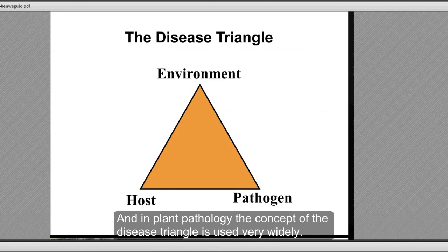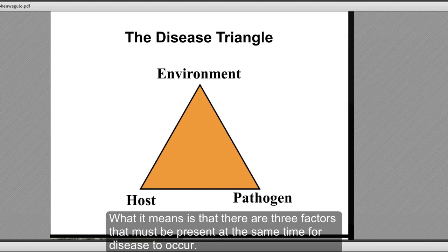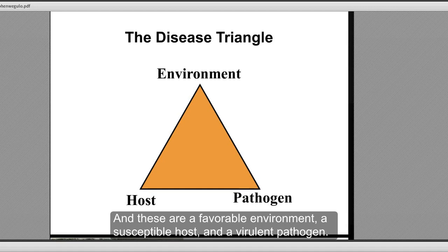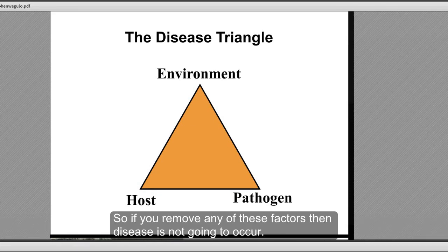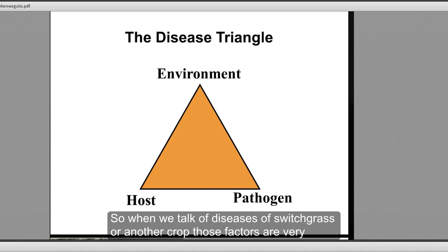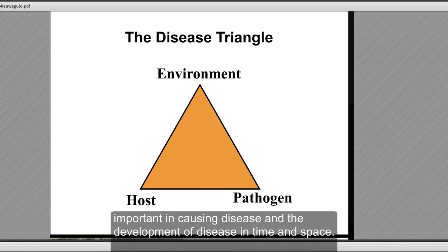In plant pathology, the concept of the disease triangle is used very widely. There are three factors that must be present at the same time for disease to occur: a favorable environment, a susceptible host, and a virulent pathogen — that's a pathogen capable of causing disease. If you remove any of these factors, then disease is not going to occur. These factors are very important in the development of disease in time and space.